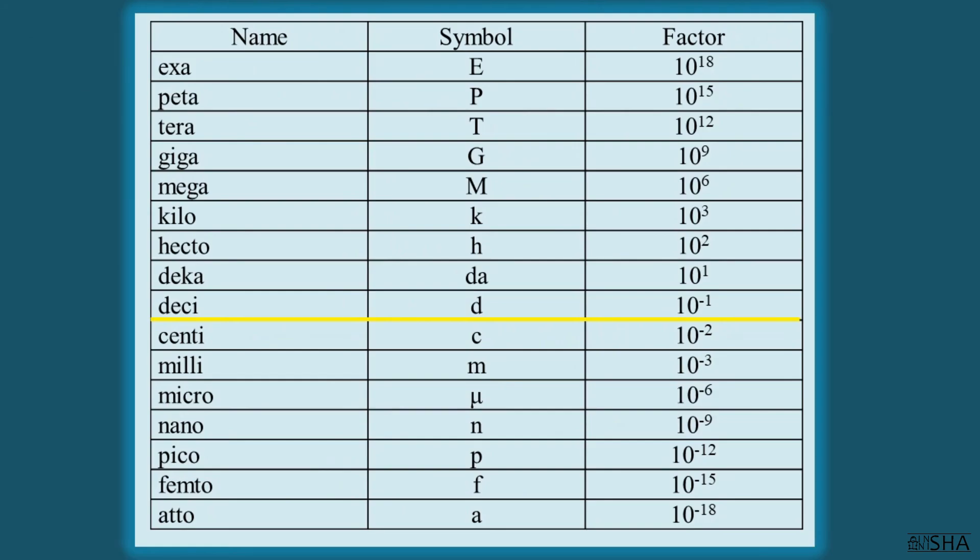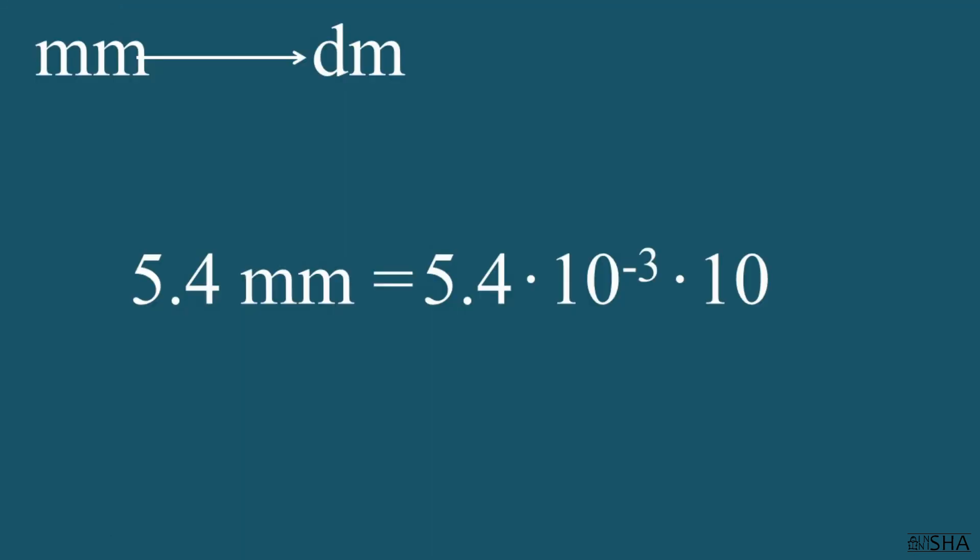And now, according to the second rule, we multiply everything we've written by the factor of the prefix deci with changing the sign of the exponent. It is ten to the first power. All this is equal to 5.4 by ten to the negative second power decimeters, or 0.054 decimeters. That's it.